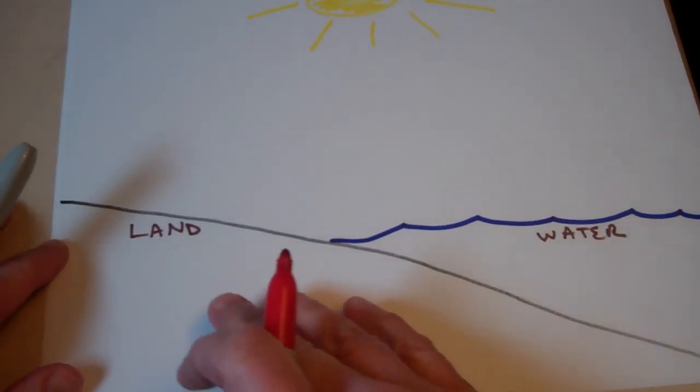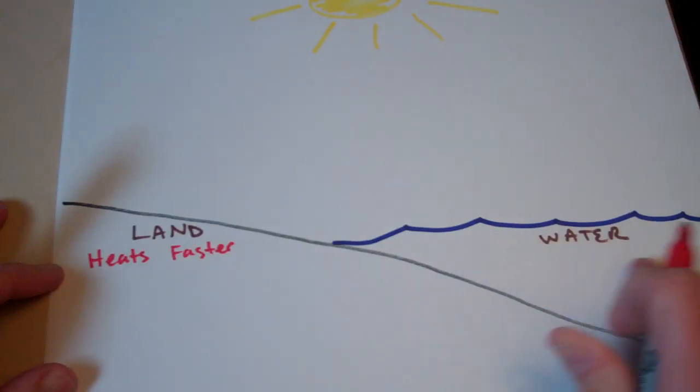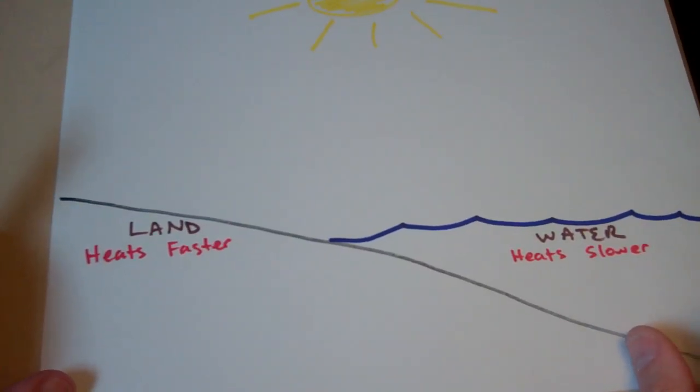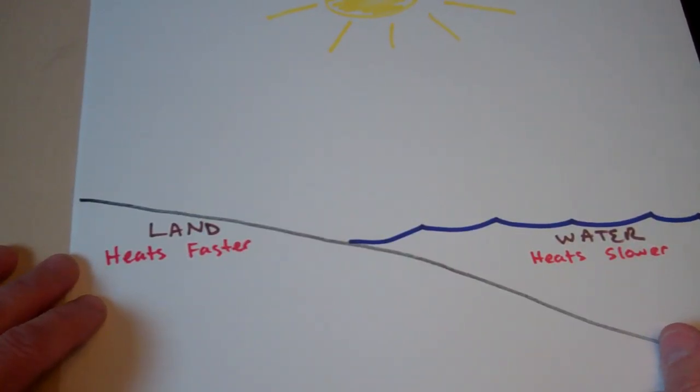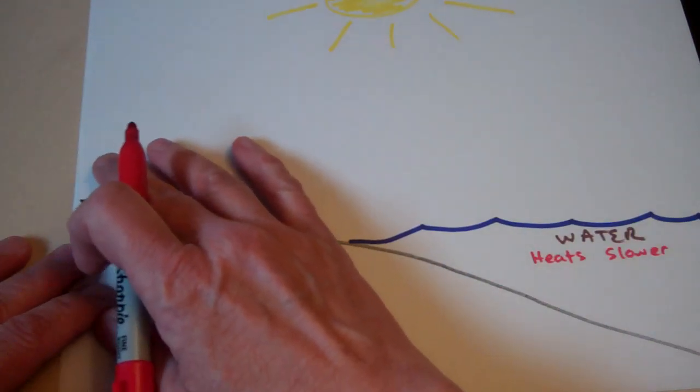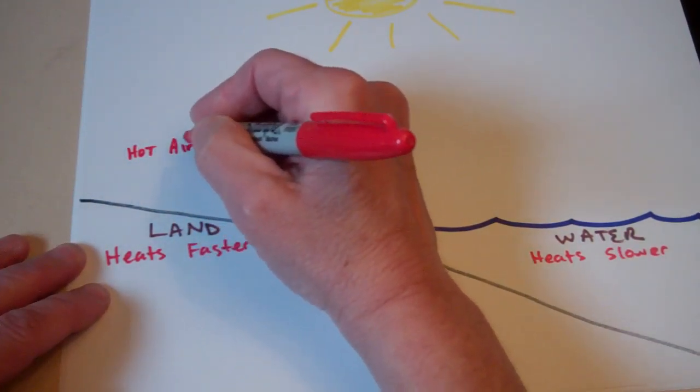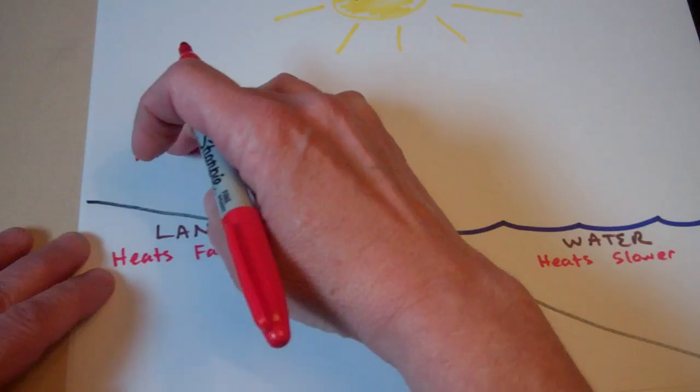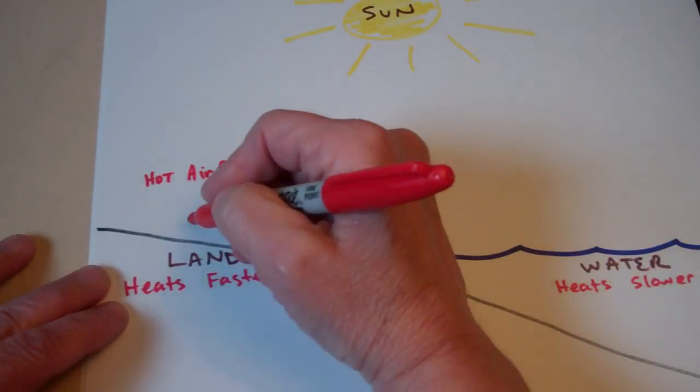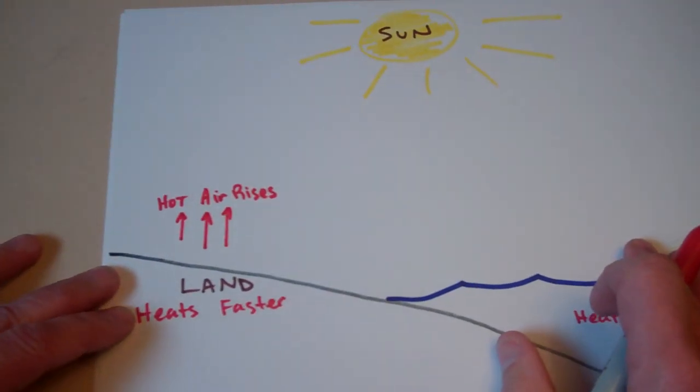So this is going to heat up faster. I'm going to just say heat's faster. And this is going to be heating up slower as that sun is shining down on it. What's that going to do to the air over the land? Well, what do you know about hot air? If this is heating up and heating the air above it, hot air rises. So the hot air rises and what that means then is that those air molecules are leaving this area. They're going up higher. So the hot air is rising and that means that this air is becoming less dense.